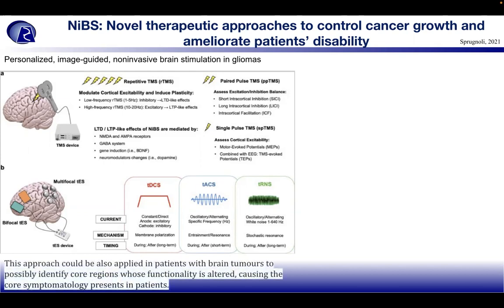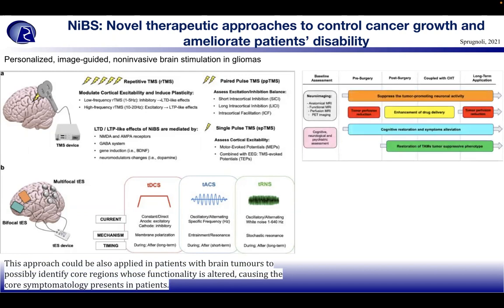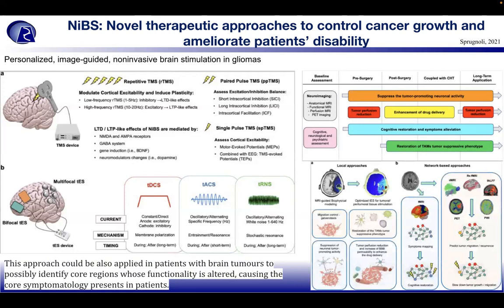This approach can be applied to patients with brain tumors to identify core regions whose functionality is altered, causing core symptomatology. The workflow begins with baseline assessment including anatomical MRI, functional MRI, perfusion MRI, PET imaging, and cognitive, neurological, and psychiatric assessments. Pre-surgery steps suppress tumor-promoting neural activity, reduce tumor perfusion, and enable cognitive restoration and symptom alleviation. Post-surgery steps restore tumor-suppressive phenotype of tumor-associated macrophages (TAMs) and enhance drug delivery.